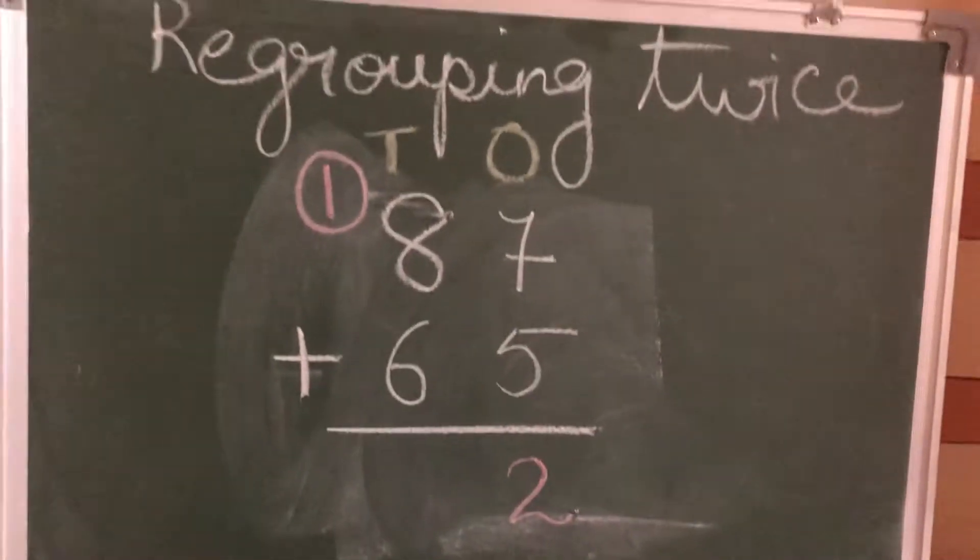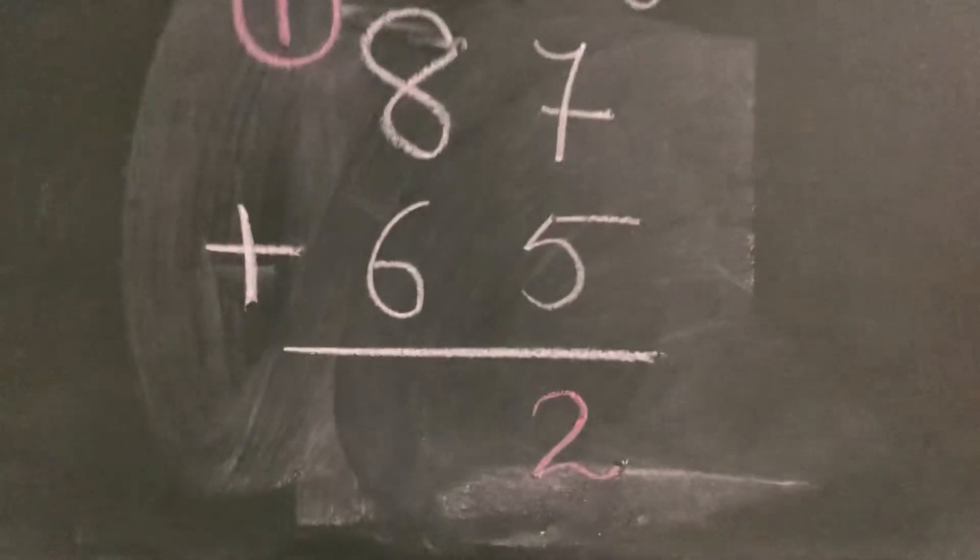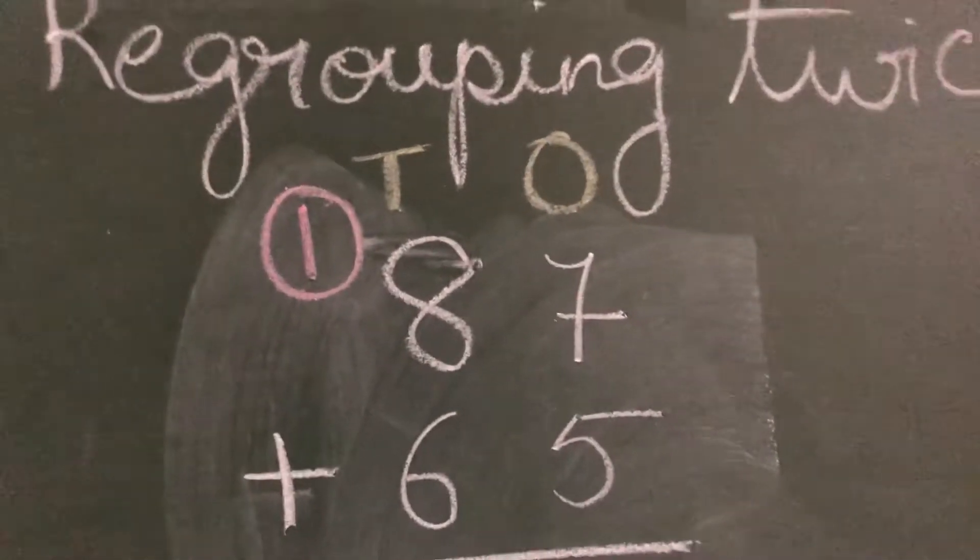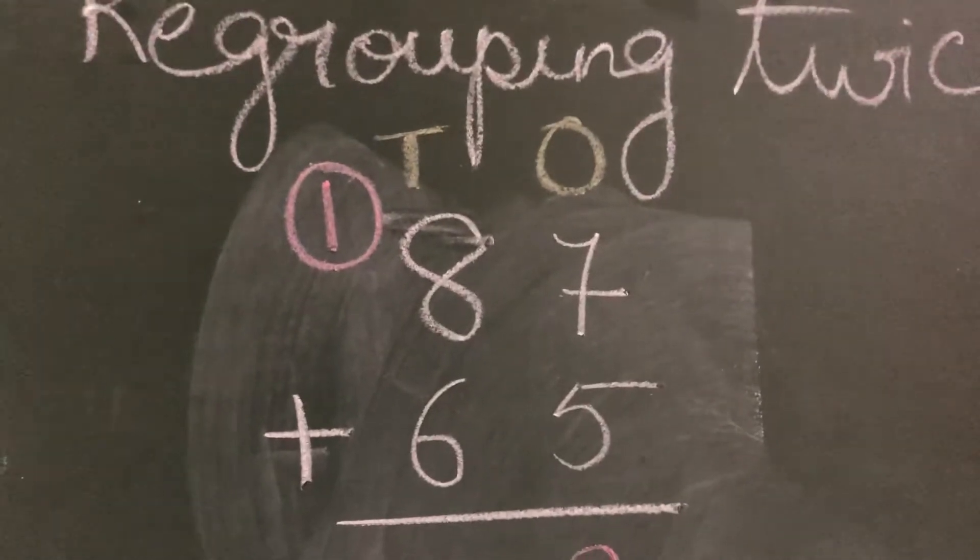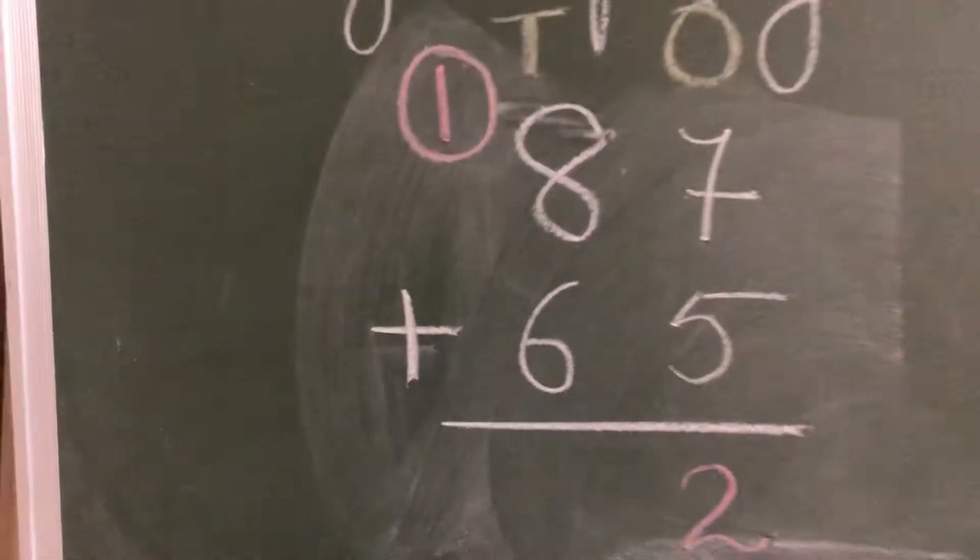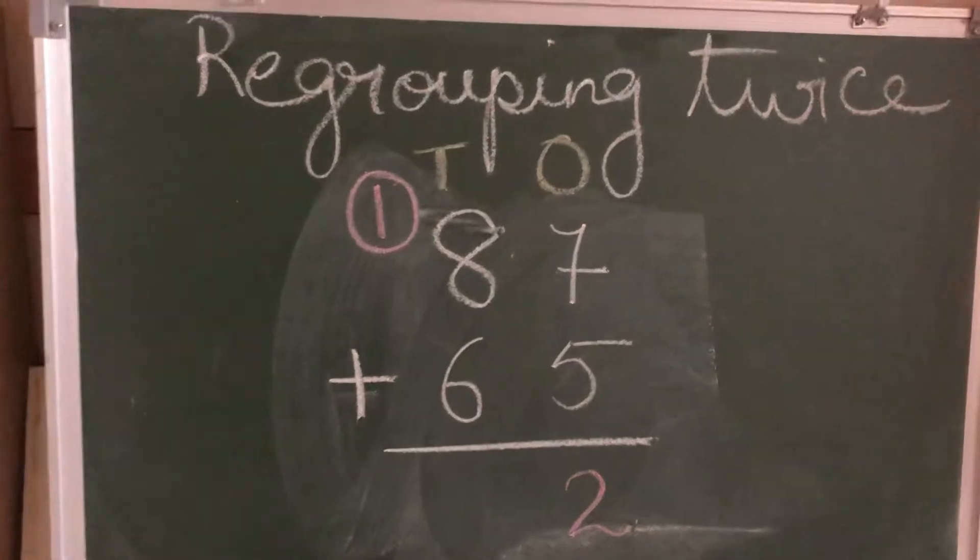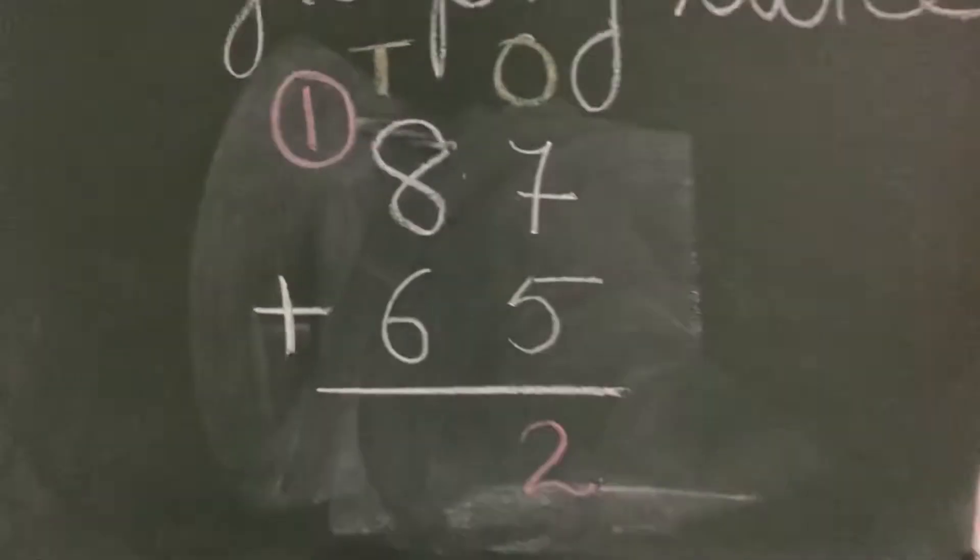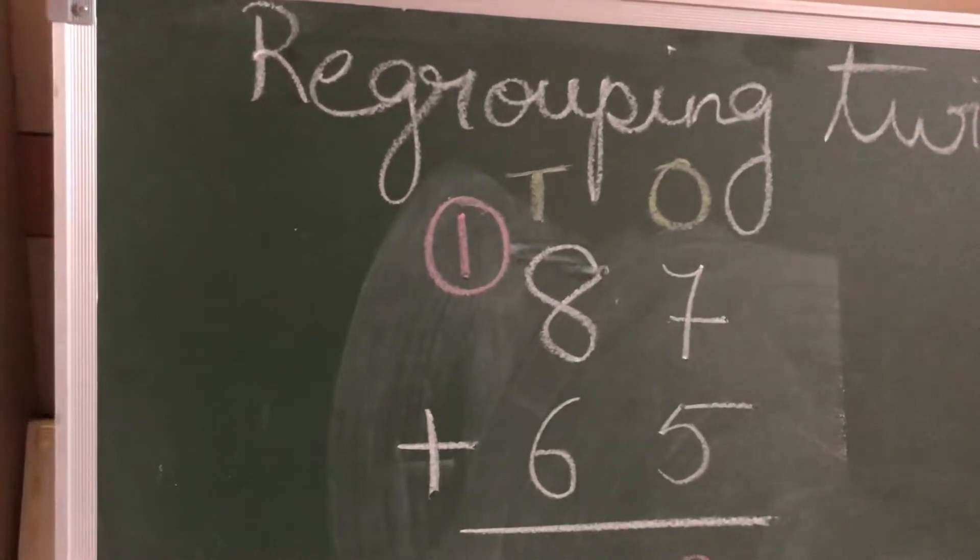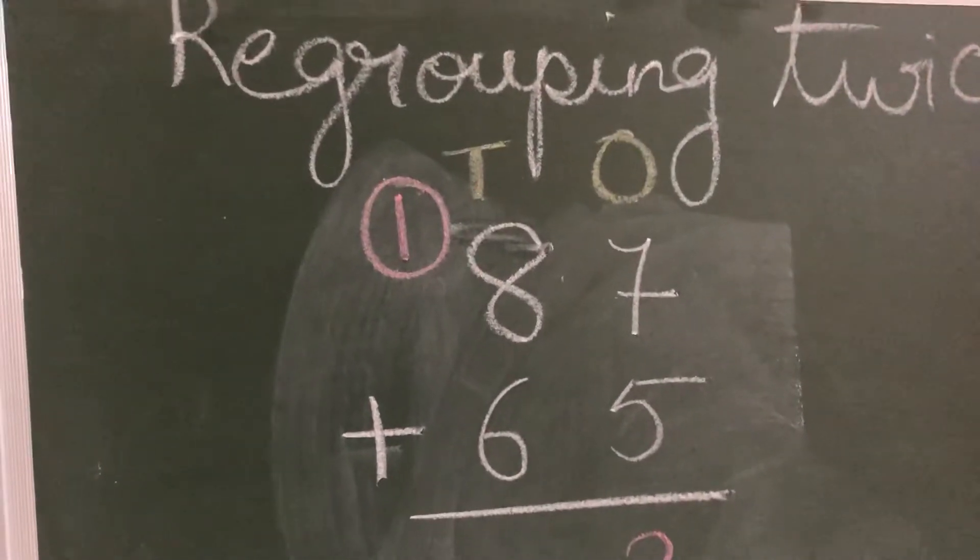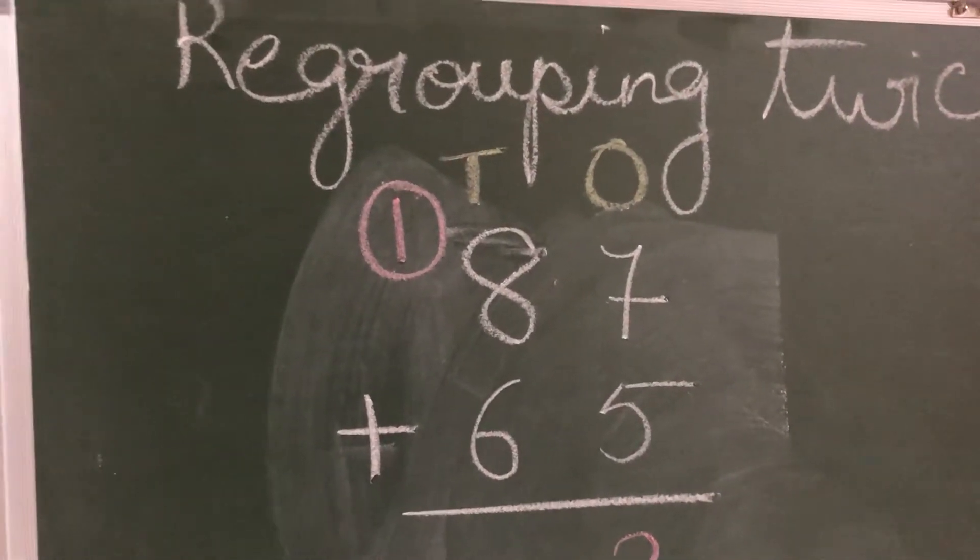Now for 12 I will write 2 in ones place here and 1 ten here. Done. Now this is regrouping in ones place. Now just see the number in tens place: 8 and 6.